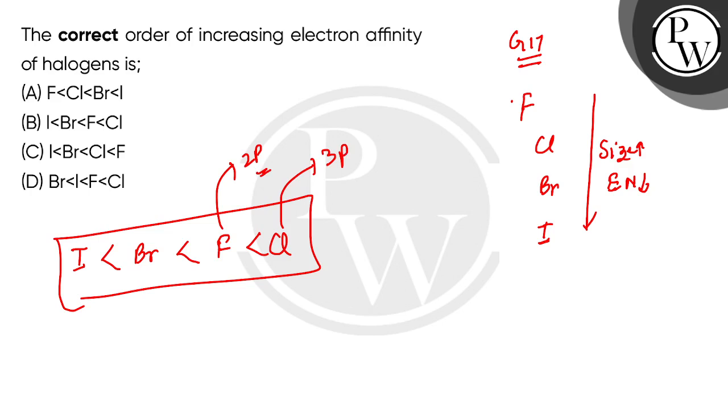It also has to overcome the electronic repulsions. When the electron goes into chlorine, the 3p orbital size is appreciably good, so the electronic repulsions are not that much, and the electron gain enthalpy value is much more.